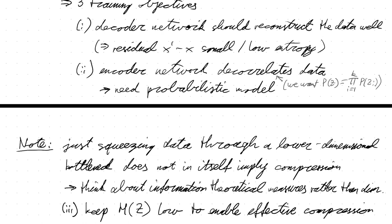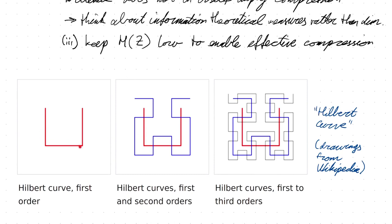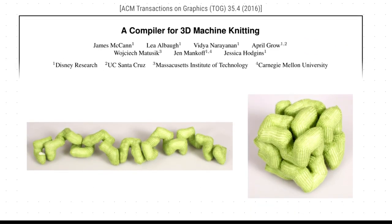I mentioned mappings that can inject between real-valued spaces of different dimensions. One such mapping is called the Hilbert curve: it's a fractal curve that starts as a simple shape mapping one dimension to two-dimensional space, and you continuously refine it so it becomes more complicated — eventually fully covering a two-dimensional space with a one-dimensional curve. These curves exist in arbitrary dimensions, and you can even get a knitted version of them. Former colleagues of mine worked on compilers for knitting machines and showed you can knit a Hilbert curve in a single piece.